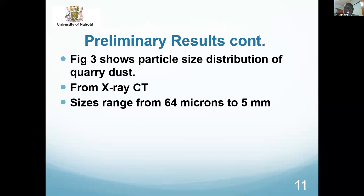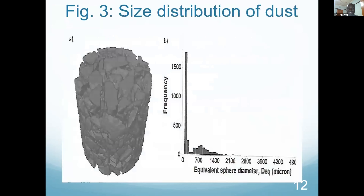We also determined the particle size distribution of the quarry dust using X-ray CT. The size ranges from 64 microns to 5 millimeters. The figure shows that distribution — equivalent sphere diameter versus frequency. You can see most particles lie in the low diameter range.